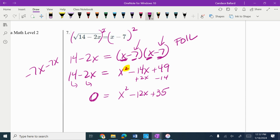Whenever I see that, I know I'm going to do a magic x. Two numbers that multiply to 35 and add to negative 12 would be 5 and 7, but both negative. So we've got (x minus 5) times (x minus 7).